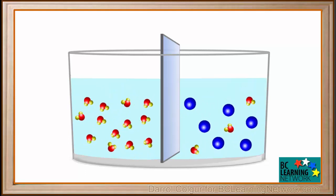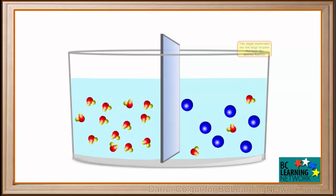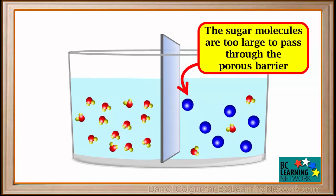Now we'll add some sugar to the right side. We see that the sugar molecules are too large to pass through the porous barrier. They just bounce off of it. But water molecules are able to pass through the barrier.